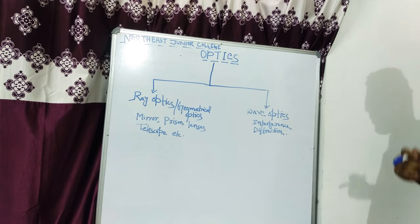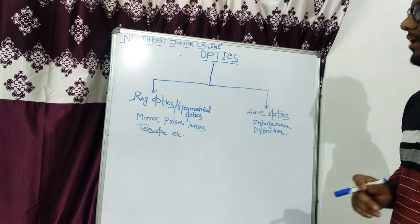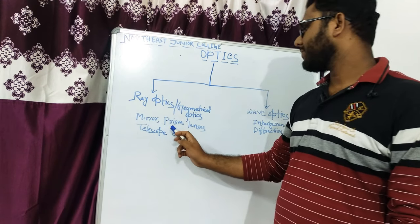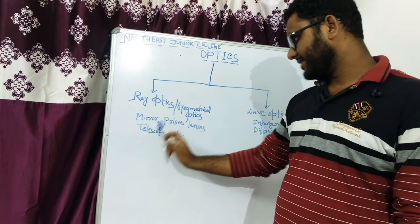There are some phenomena like mirror, prism, lenses, and telescope that are explained by optics.